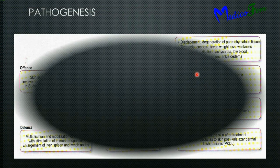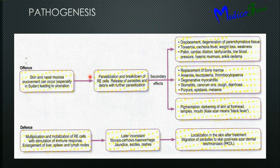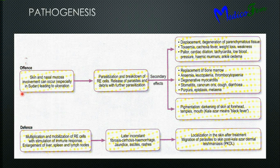Pathogenesis: there are mainly two mechanisms depending upon the host immune system response — defensive or offensive. In the defensive mechanism, there is multiplication and mobilization of reticuloendothelial cells with stimulation of the immune system, causing enlargement of the liver, spleen, and lymph nodes. Later, fibrosis, cirrhosis, and hemorrhage occur in the liver, leading to jaundice. In the peritoneum, ascites occur; in the skin, it causes a rash. Migration of the parasite to skin causes post-Kala-azar dermal leishmaniasis, known as PKDL.